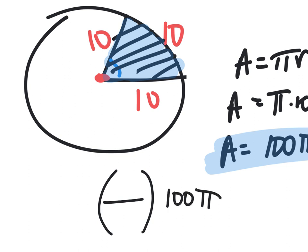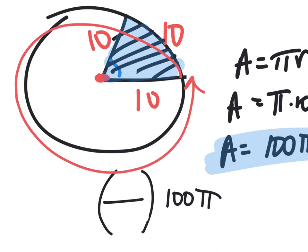What's the fraction? Is it something out of 360 degrees? No, because we're not using degrees, we're using radians. If you were going to say there's 360 degrees, would you agree that there's how many radians then — all the way around? 2 pi. And what do we have? One radian out of 2 pi total.